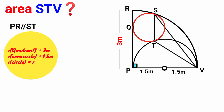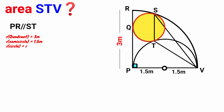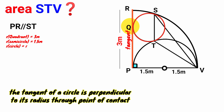Now consider this small circle. Line PR is a tangent to it at this point. From circle theory, the tangent of a circle is perpendicular to its radius through the point of contact. So if we draw out the radius of the circle from this point of contact, the tangent will be perpendicular to it — hence this angle is a right angle.